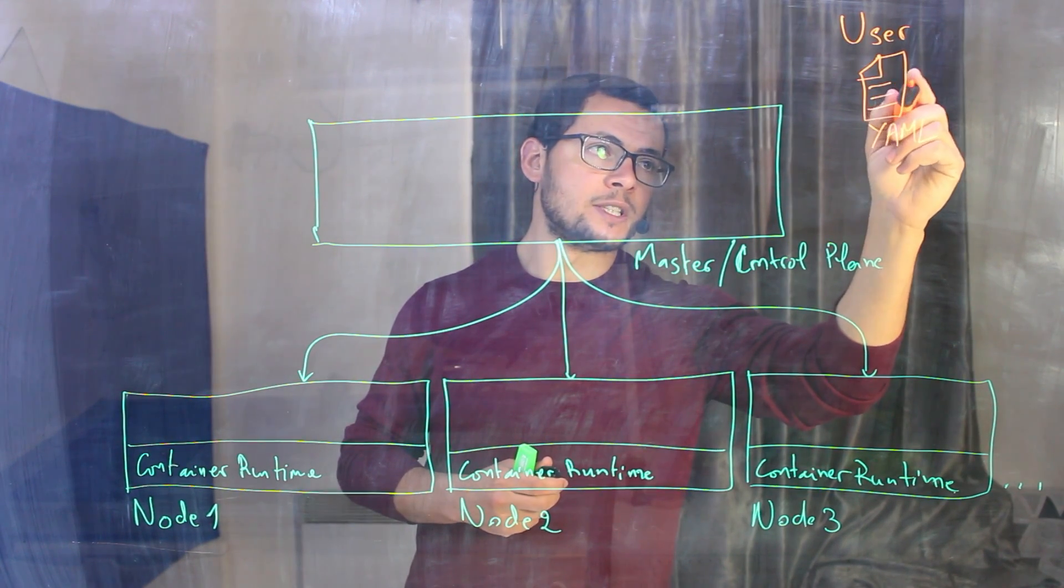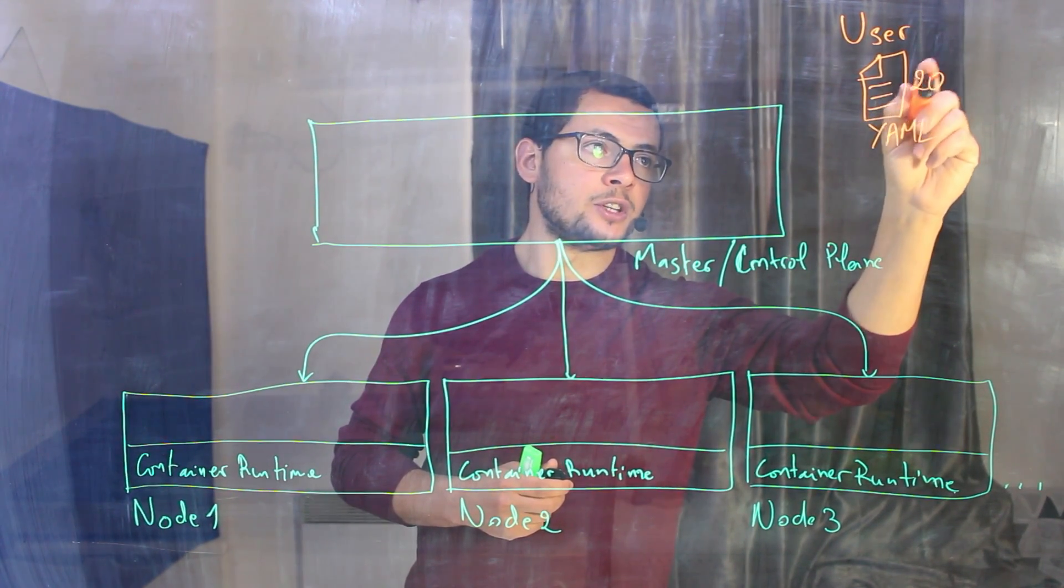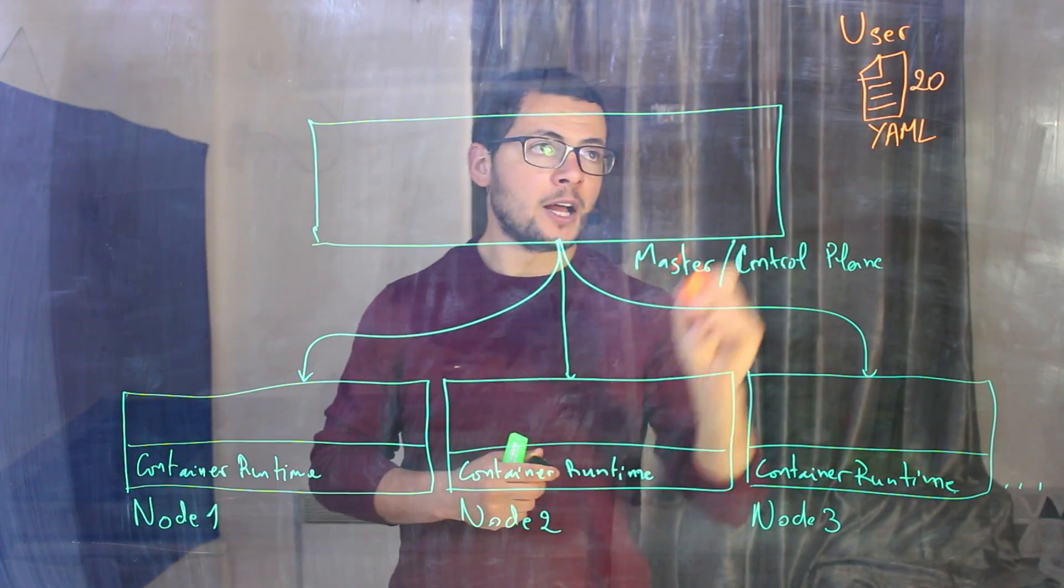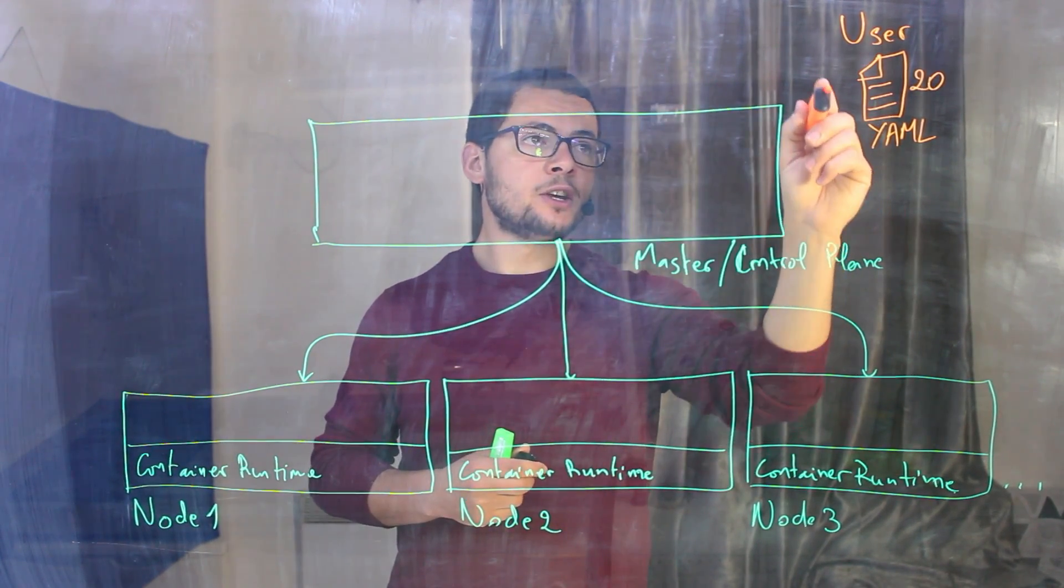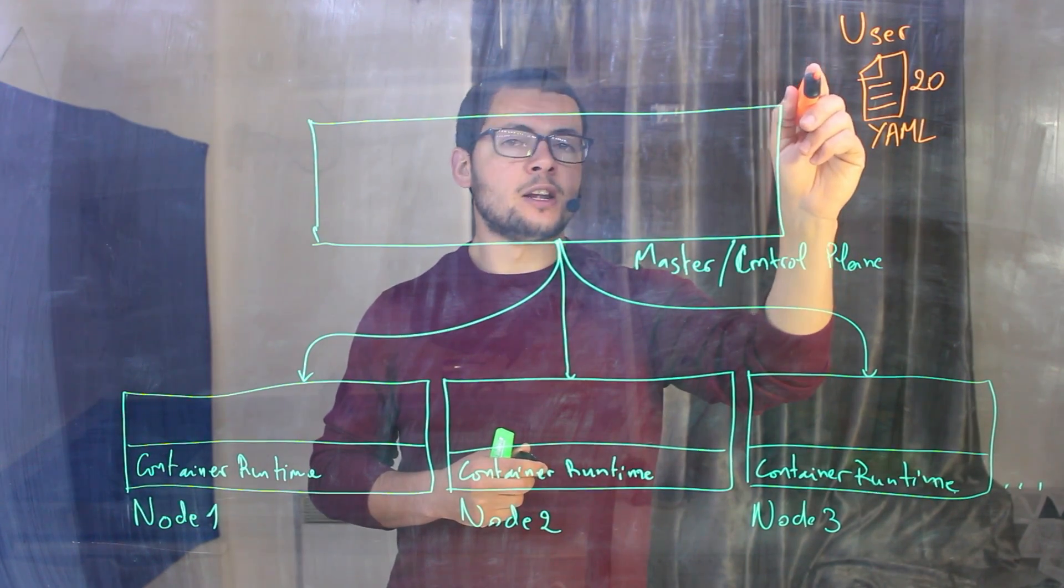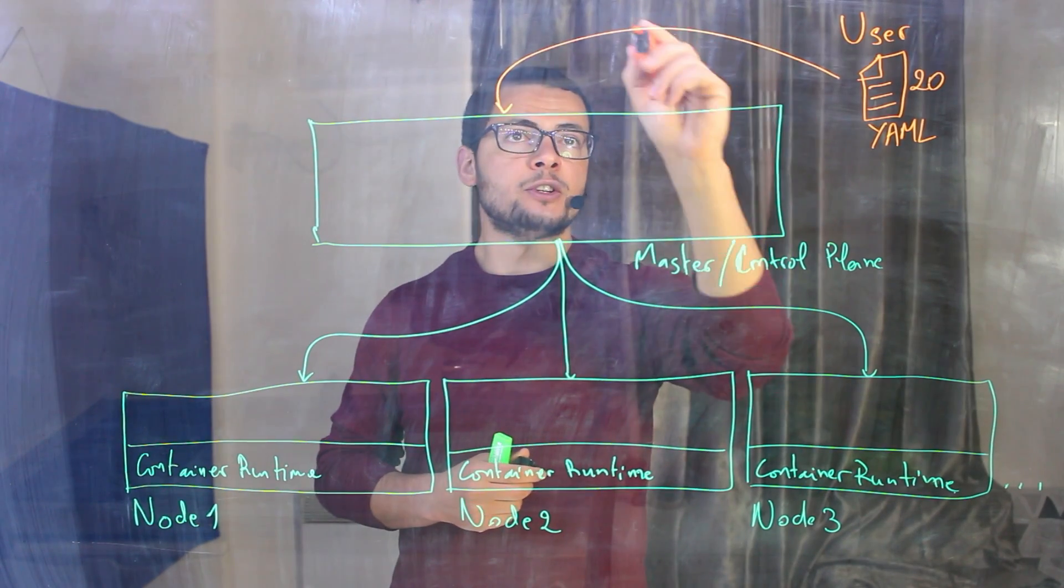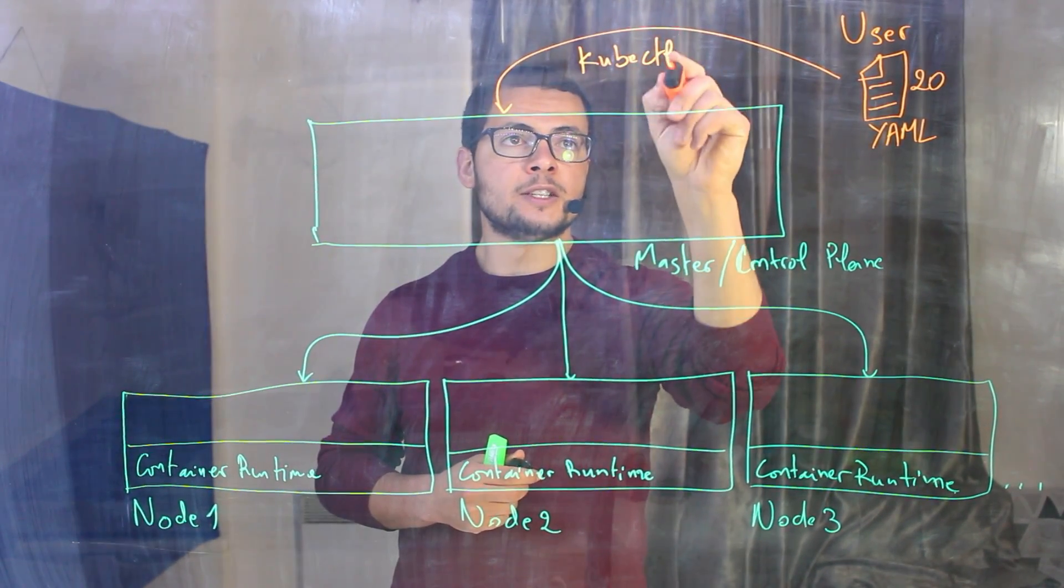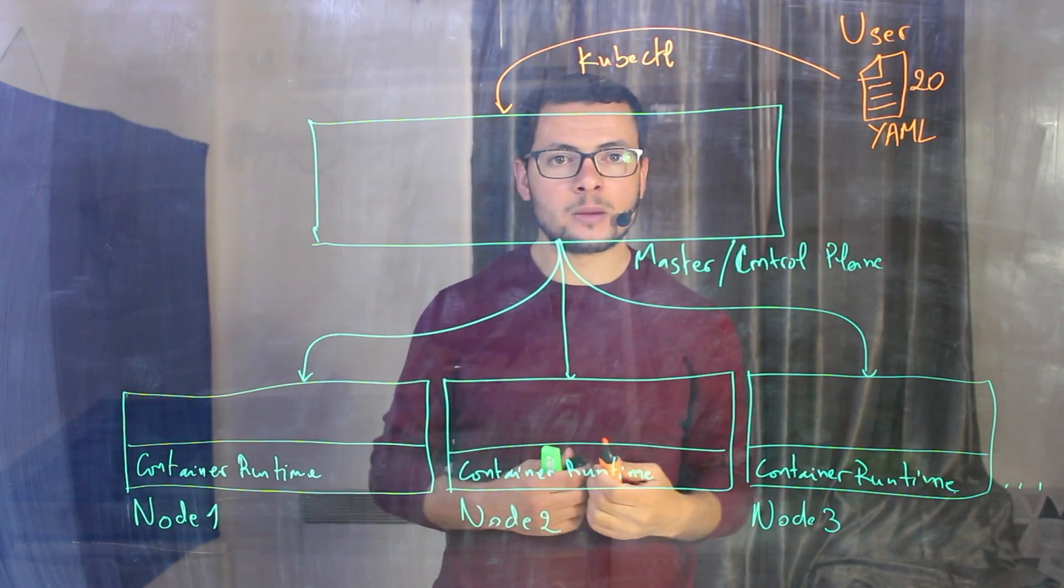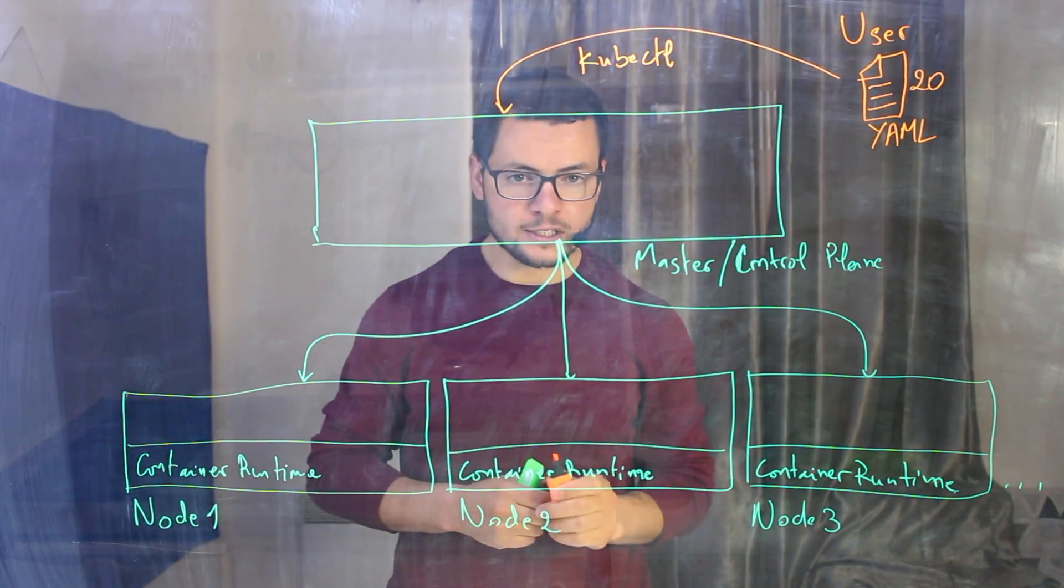For example, here we will say we want to run, for example, 20 containers. And this configuration will be passed to the control plane through the kubectl. So from here we'll have the deployment right here through using kubectl. kubectl is the command line used by the developers in order to run the YAML configuration into the cluster.